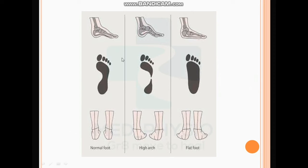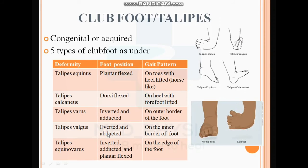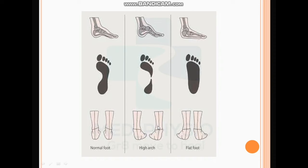Looking at the difference between the three patterns of the foot: the first is a normal foot showing normal bony alignments and aponeurosis; in high arch there is an exaggerated curvature; and in pes planus the arch is flattened. You can also judge from their footprints — normal, high arch, and flat foot. Observing from the posterior view, in the normal foot there is a straight line with the calcaneum; in high arch it is slightly everted; and in flat foot it is inverted.